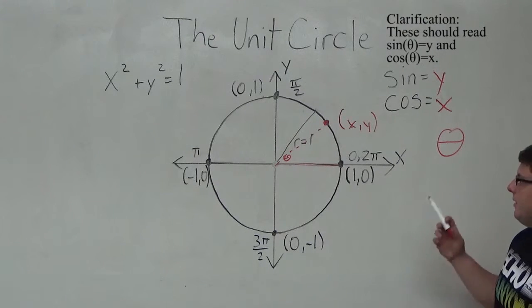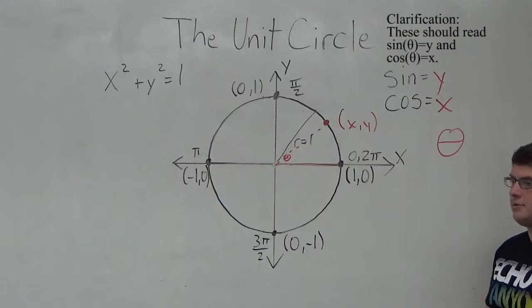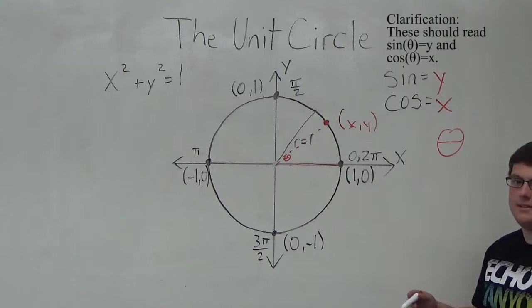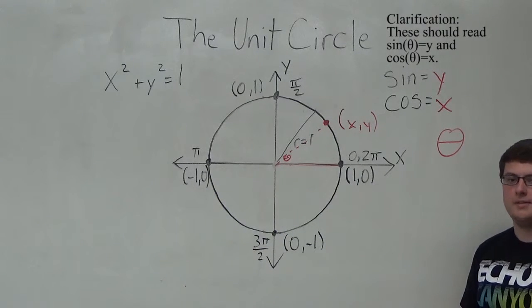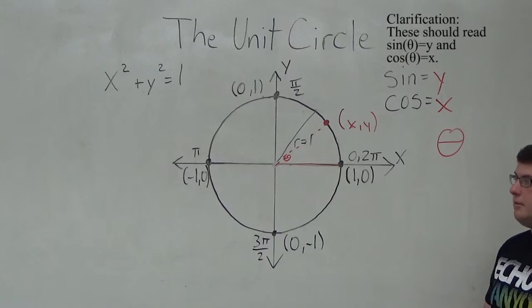We can use the unit circle to find the value of sine and cosine at any point along the unit circle. We can also determine if sine or cosine of an angle will be positive or negative at any given point using the unit circle.